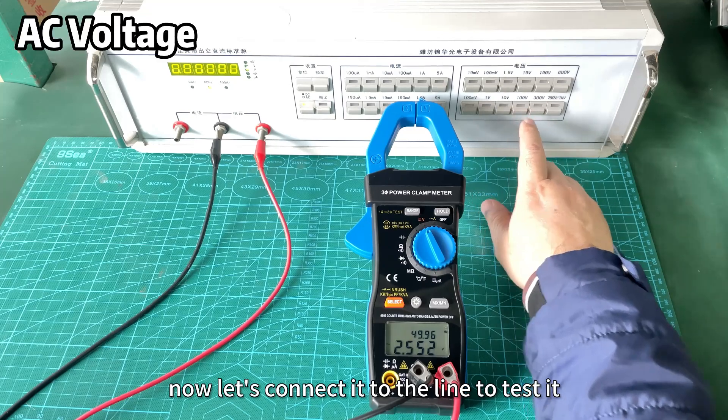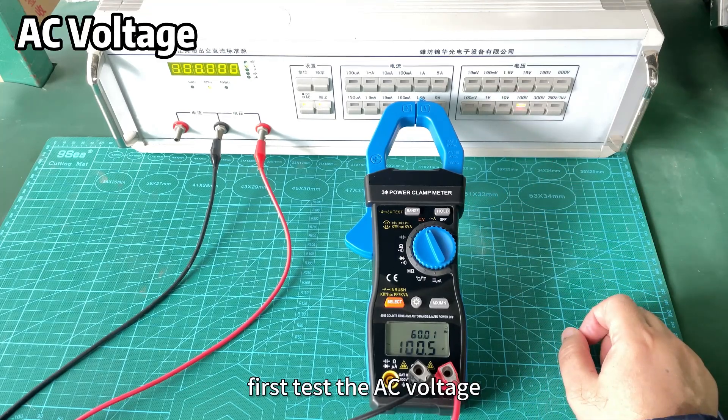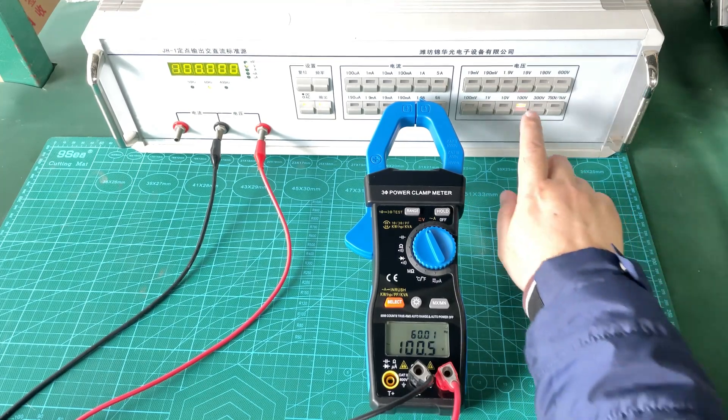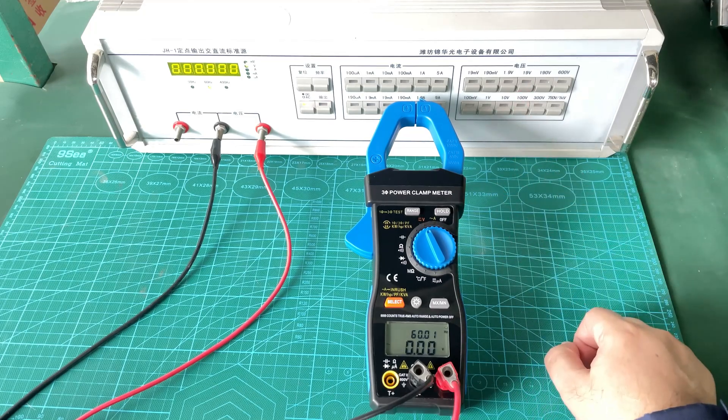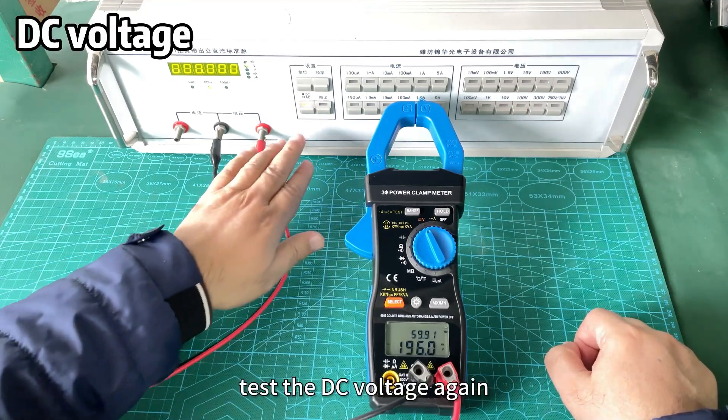Now let's connect it to the line to test it. First test the AC voltage, and you can see the result soon. Test the DC voltage again.